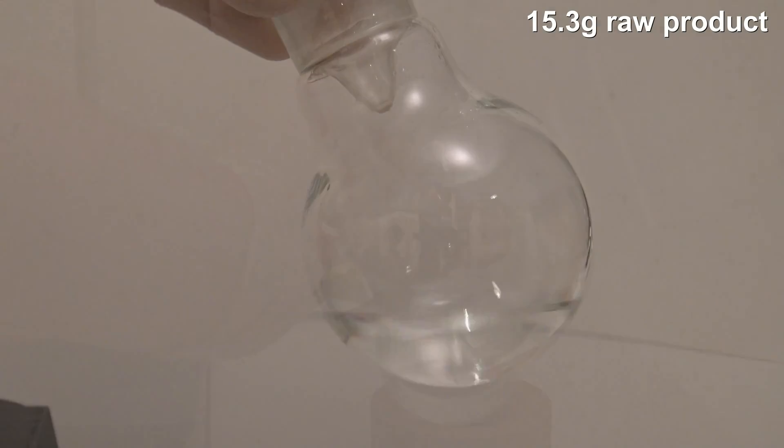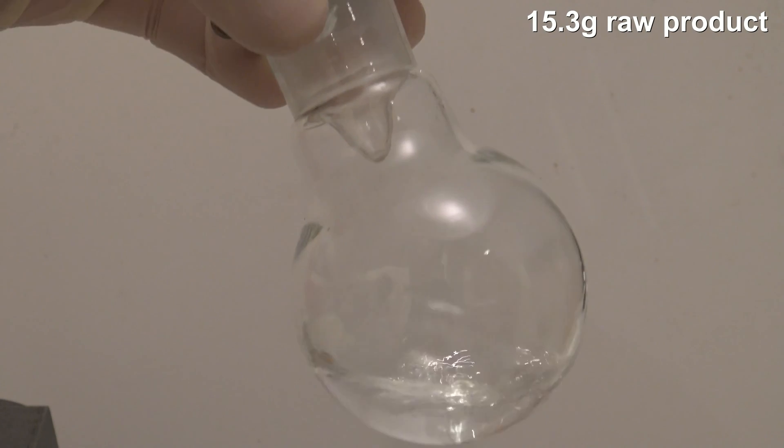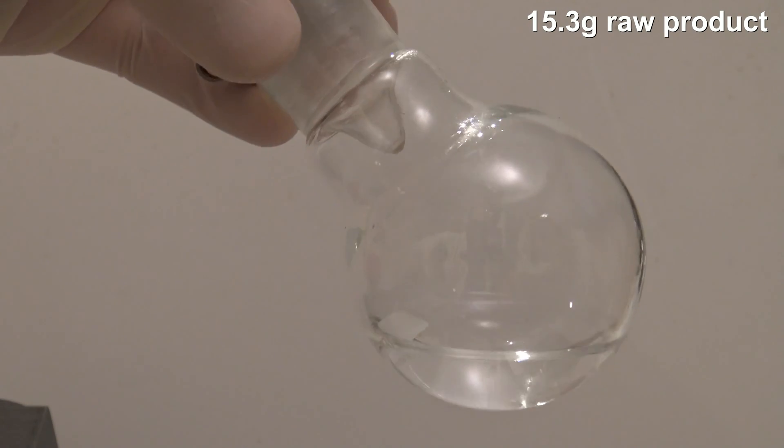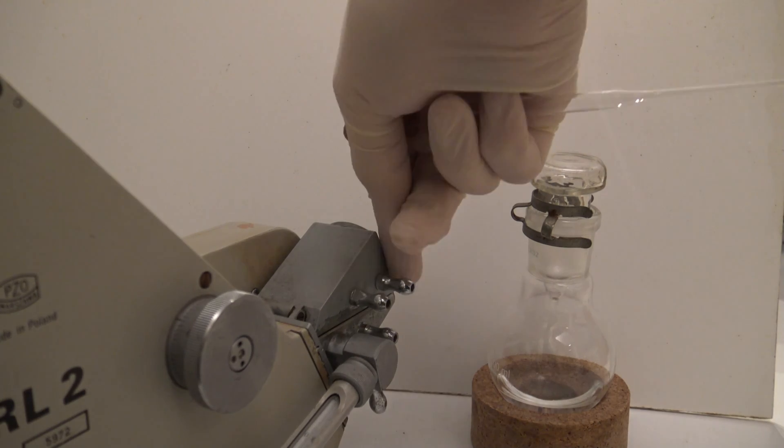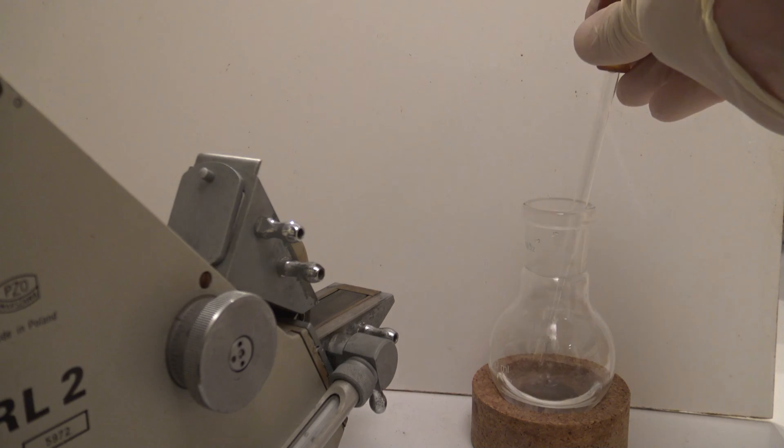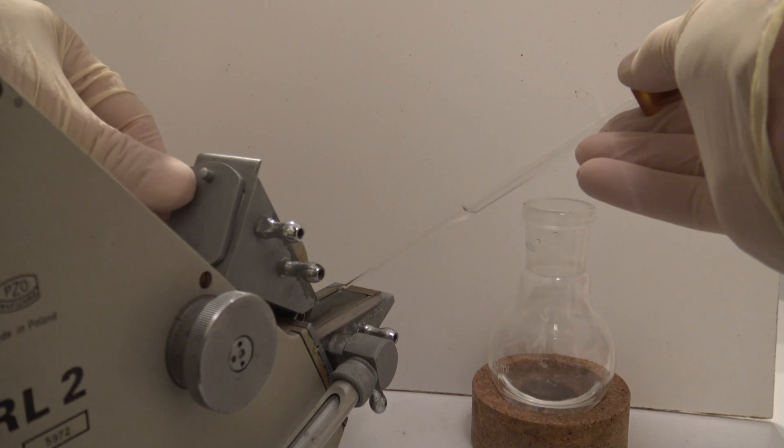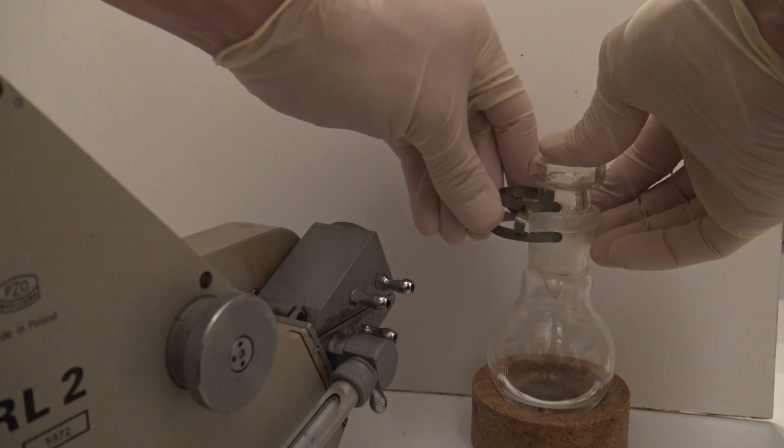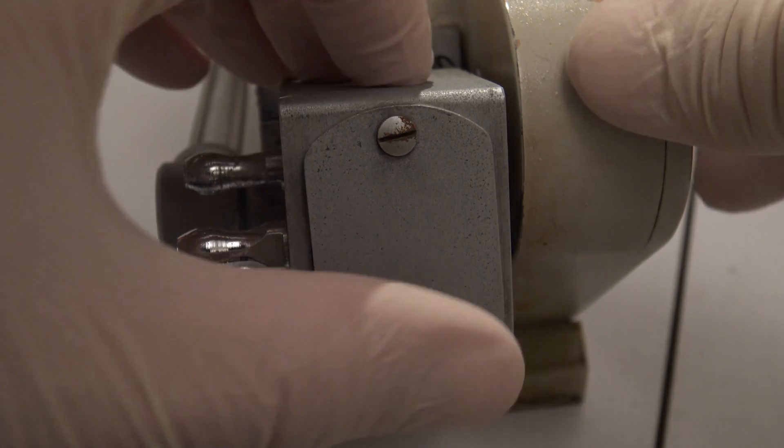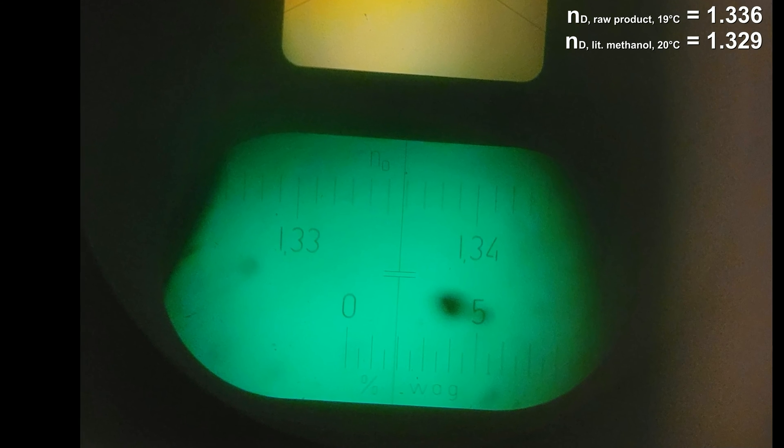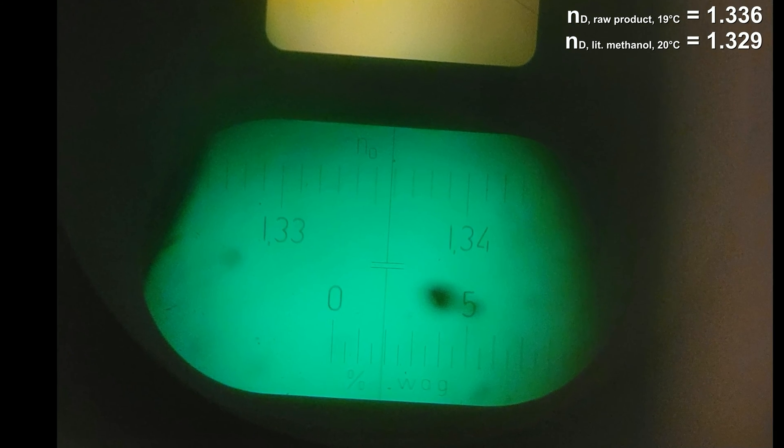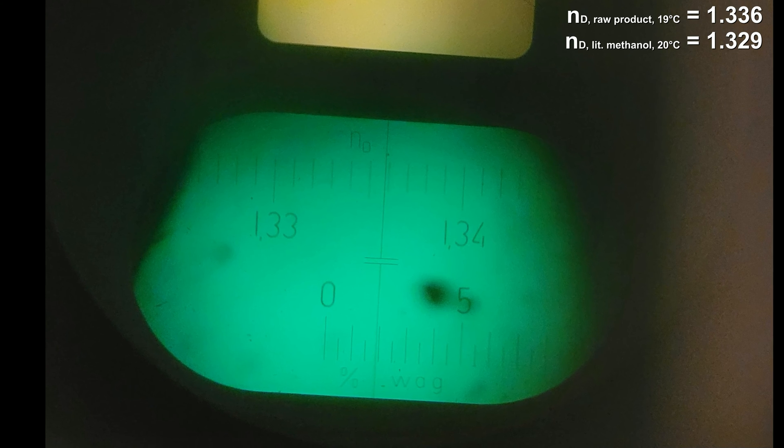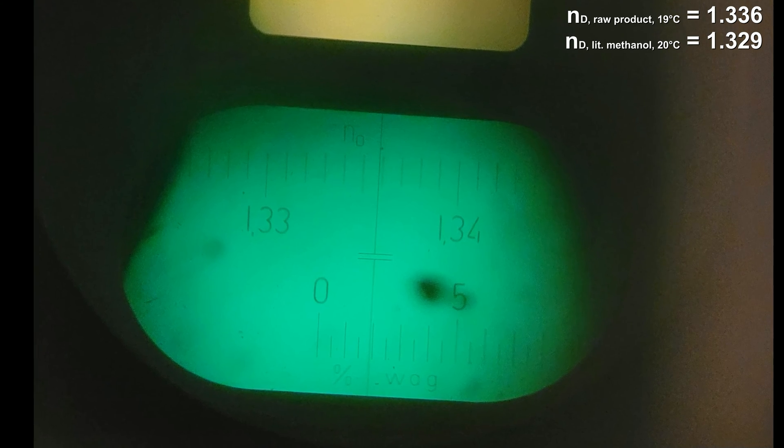15.3 grams of raw product were obtained, and after that the refractive index was determined with a refractometer. The refractive index was at 1.336, which was already close to the literature value of methanol. It has to be considered that the value should be around 0.002 higher due to the temperature of 19 degrees C in the lab.